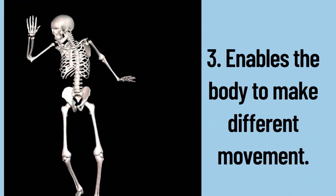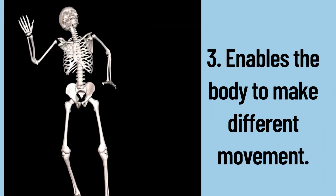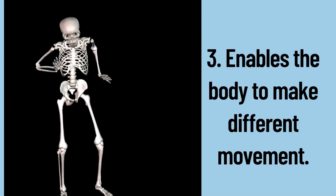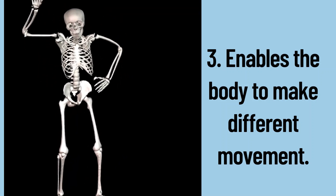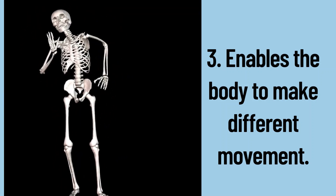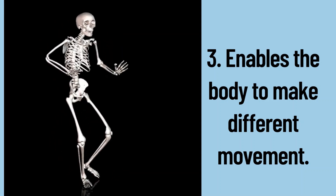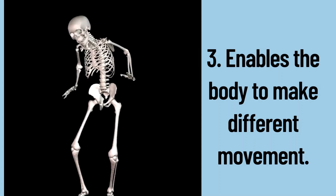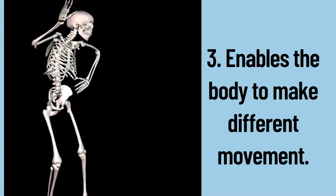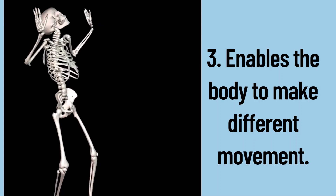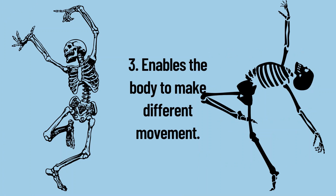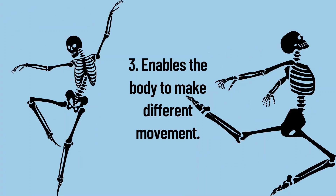Number 3: it enables the body to make different movements. So we can dance — turn around and move like this. The skeletal system enables us to make all kinds of movements. Can you do that?